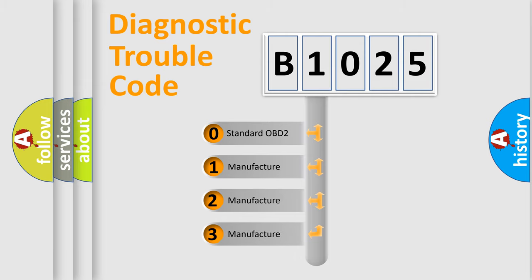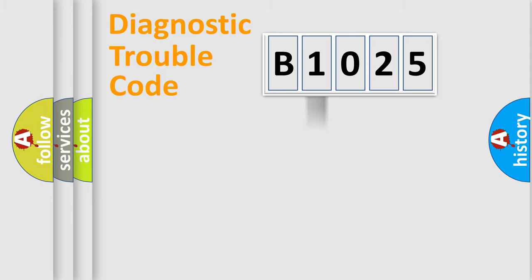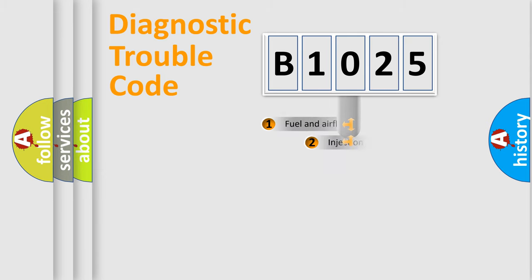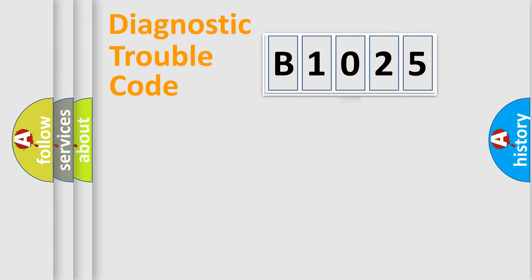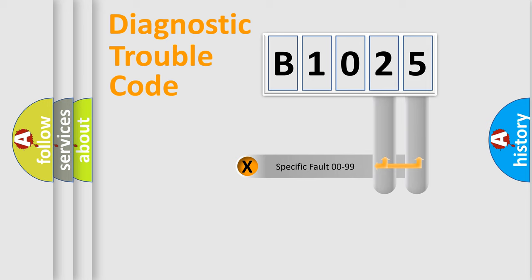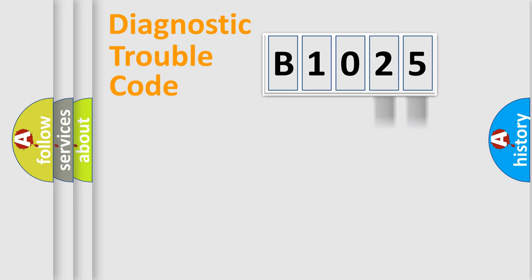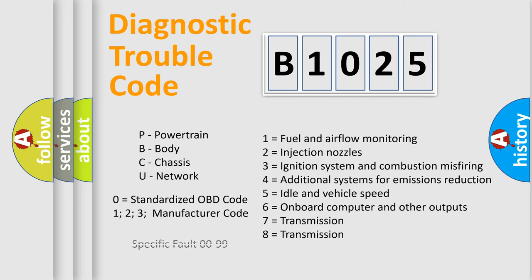If the second character is expressed as zero, it is a standardized error. In the case of numbers 1, 2, or 3, it is a more specific expression of a car-specific error. The third character specifies a subset of errors. This distribution is valid only for the standardized DTC code. Only the last two characters define the specific fault of the group, and this division is valid only if the second character is expressed by the number zero.